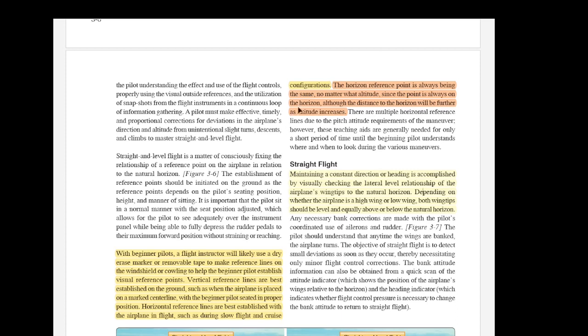Let's just break this down, make it really simple and reinforce the point here. The horizon reference point is always the same. It doesn't matter how high you go. It is always going to be in the same place in relation to whatever your reference point is on or outside of the aircraft. If it's the wing or the cowling or something inside the aircraft that is your reference point for that particular aircraft, then your horizon will always be in a fixed position relative to that reference point when you have a specific attitude that keeps you going in straight and level flight. A horizon reference point is always being the same, no matter what altitude, since the point is always on the horizon, although the distance to the horizon will be further as altitude increases.